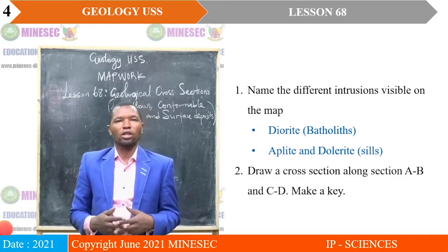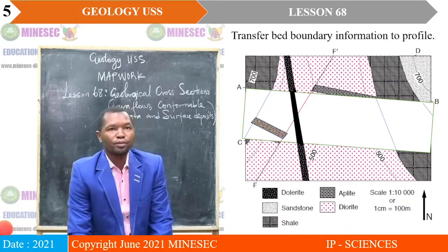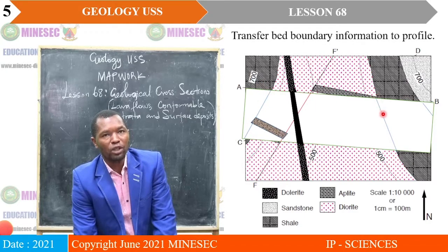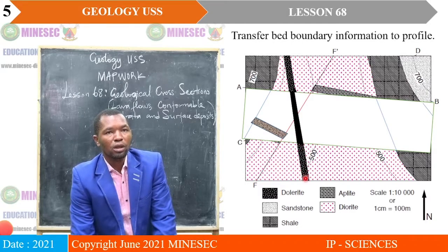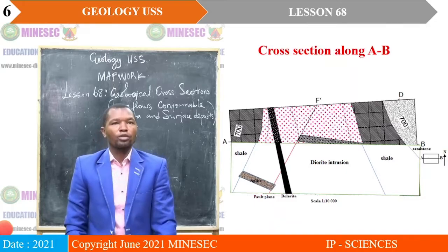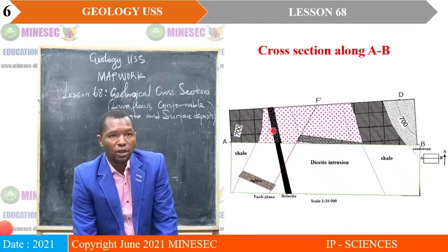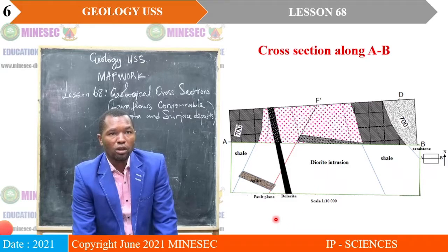We are going to proceed to draw a cross-section along A-B and then C-D. For A-B, that is the way we place our paper strip. We plot out the batholith so that we come up with an overturn. This is our sill, and that is a fault plane. This is what we obtain as a cross-section along line A to B — showing the fault plane, the intrusion, the batholith, and displacement along the fault plane.